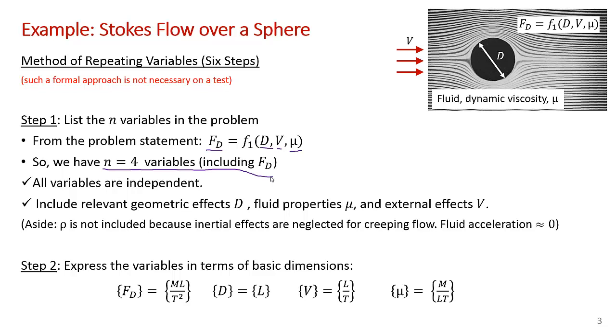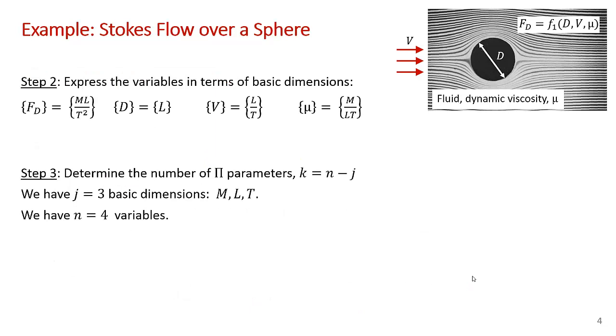Step two is to express the variables in terms of basic dimensions. I'm going to use the mass length time scheme. You could use the force length time scheme if you like. For the drag force, which would be Newtons, using the mass length time scheme, that's going to be a kilogram meter per second squared. Diameter has dimensions of length. Velocity is distance over time. And for dynamic viscosity, the units are kilogram over a meter second. If you didn't happen to remember that, you can deduce this by remembering Newton's law of viscosity.